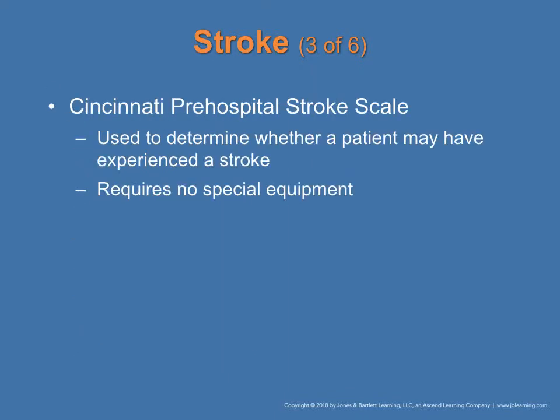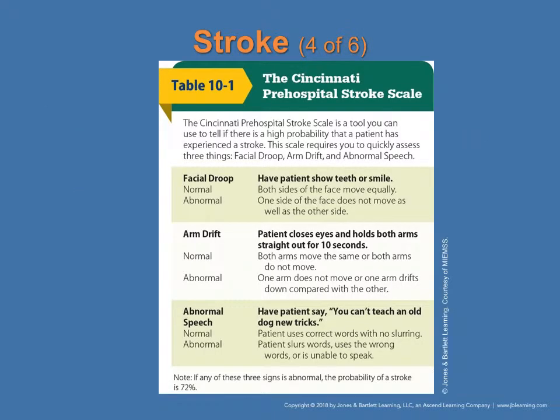The Cincinnati Pre-Hospital Stroke Scale is used to determine whether a patient may have experienced a stroke. It covers three areas: facial droop — is one side lower than the other, with muscles not working? Arm drift — do the extremities drift? And speech — how does the patient speak? Assess whether each finding is normal versus abnormal. This is a very quick assessment tool.